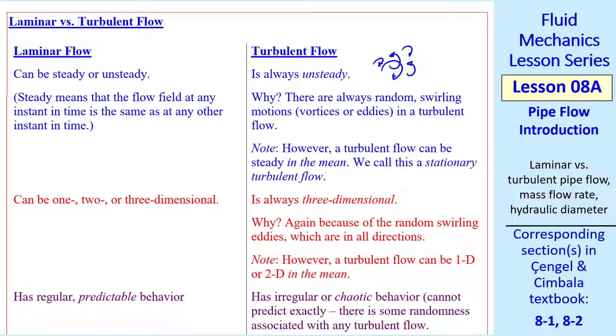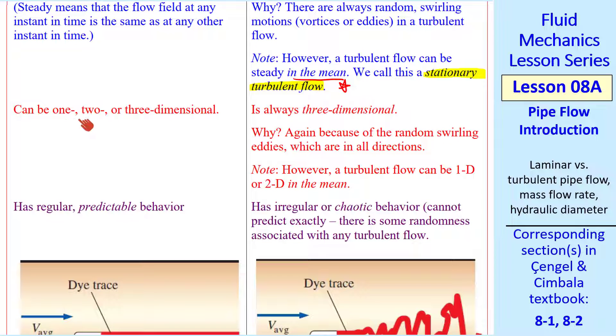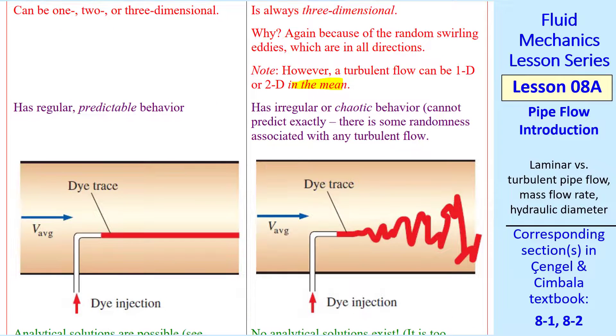However, turbulent flow can be steady in the mean, and that's what we'll generally look at in this course. We call that a stationary turbulent flow. Laminar flow can be one, two, or three dimensional. Turbulent flow is always three dimensional, again because of these random swirling eddies. But a turbulent flow can be 1D or 2D in the mean. Again that's what we'll always talk about in this course.